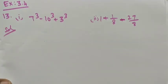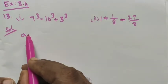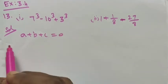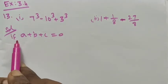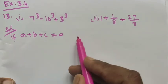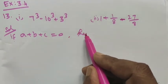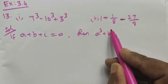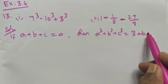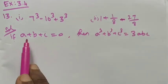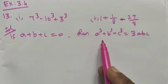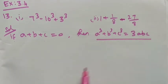We have the identity: if a plus b plus c is equal to 0, then a cube plus b cube plus c cube is equal to 3abc. If the sum of the values is equal to 0, then we can use this formula — that is the condition.